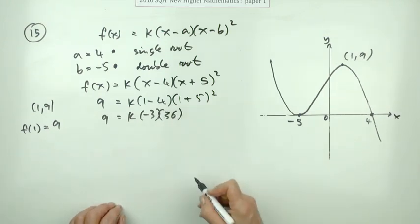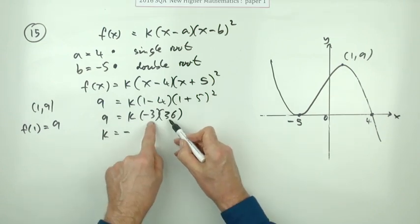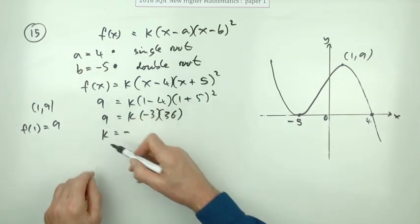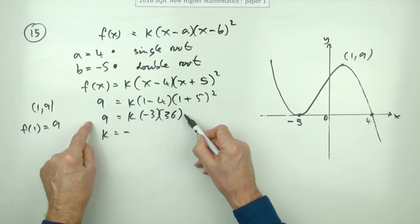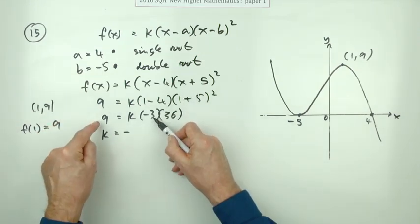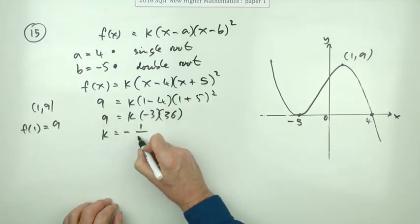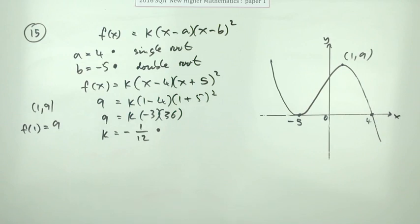So the answer is negative. So k will be negative. Instead of multiplying them and write them underneath and start to cancel, it's just a little equation. Divide by three takes it down to three, divide by three again makes that 12, so you're left with 1 over 12 for the third mark.